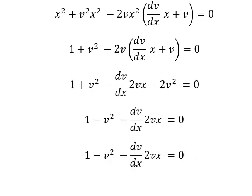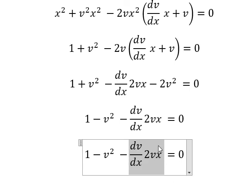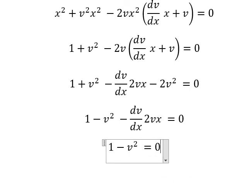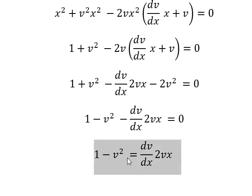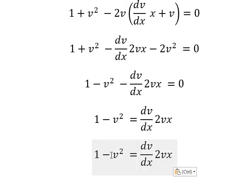Next, I will put this one to the right. So we divide both sides by 1 minus v square and dx, and x goes to the left.